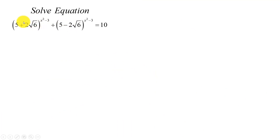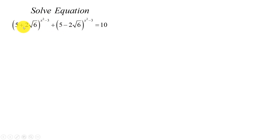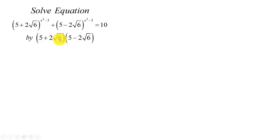Now we change this equation. It has a similar basic structure — we only change plus and minus. To solve this equation in this form, we must take (5 + 2√6) and multiply it by (5 - 2√6).